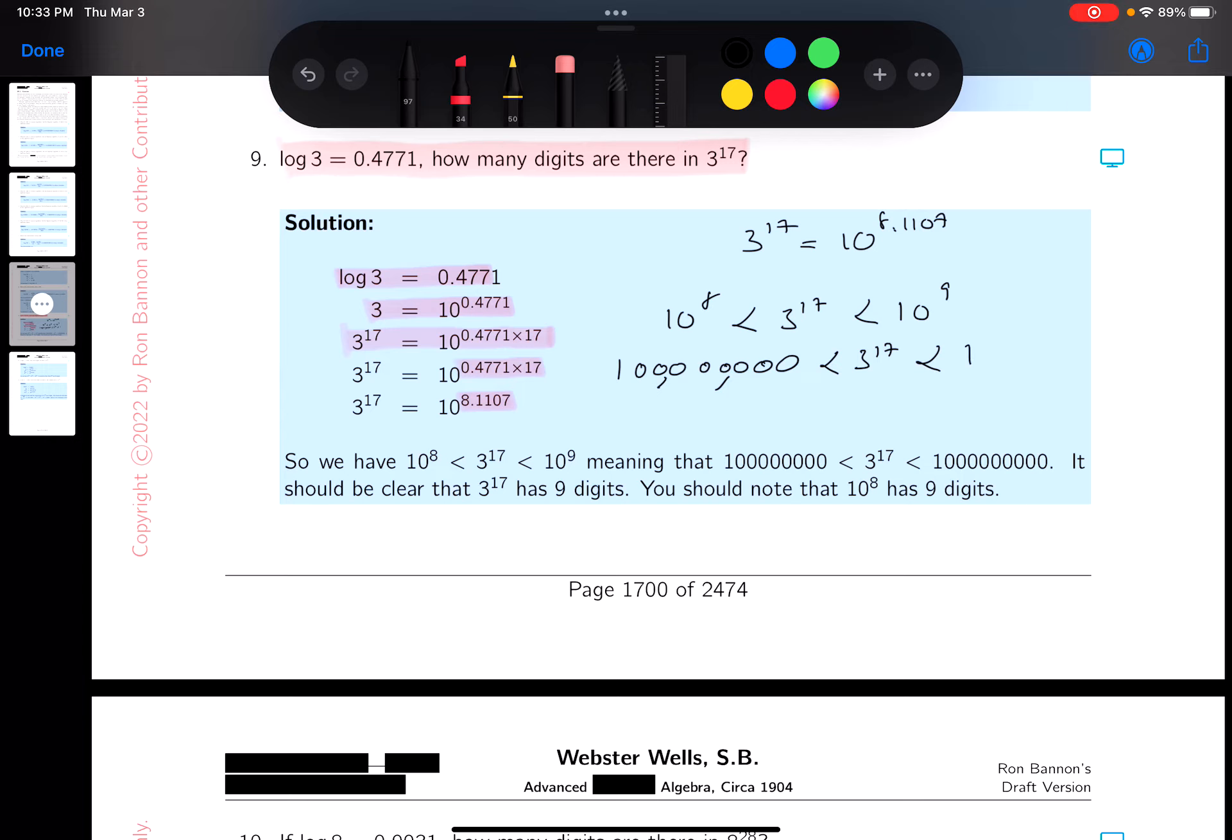And let me write this over here. This is going to be one followed by nine zeros. One, two, three, four, five, six, seven, eight, nine. If you count the digits over here, there's 10 digits here. And there's nine digits over here.